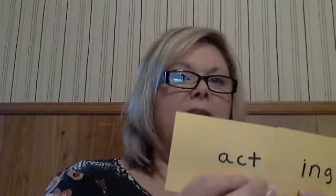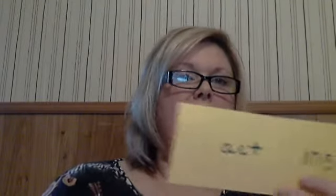Let's try another one. Here I have the word ACT. What do you notice about the word ACT? It has the short vowel sound of A, but it has two consonants at the end. So if we add ING, what do we do? We just add the ING. We don't double the T because we have C as the helper. So we have ACTING.